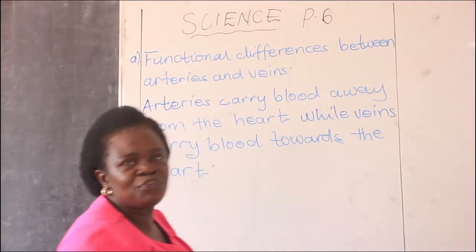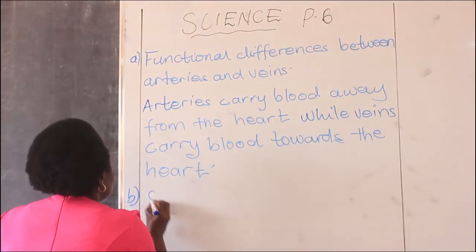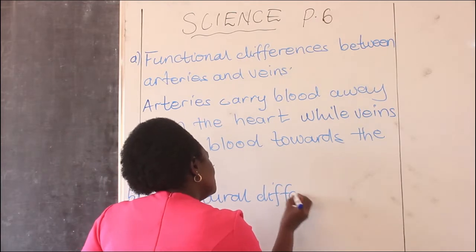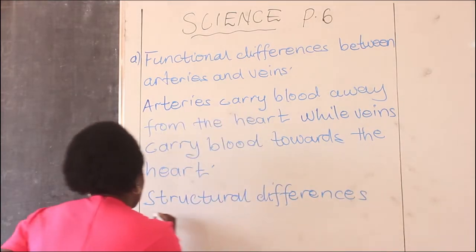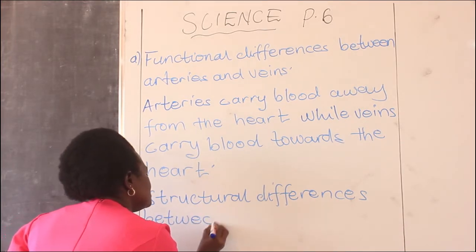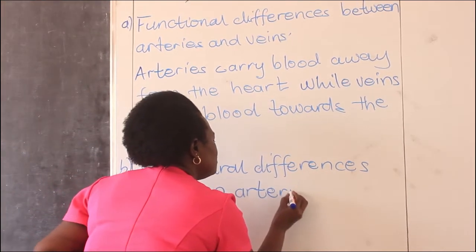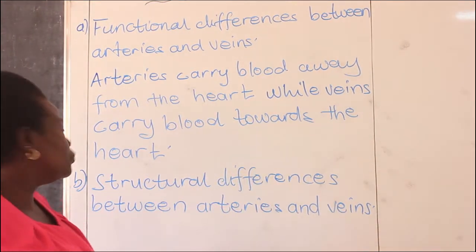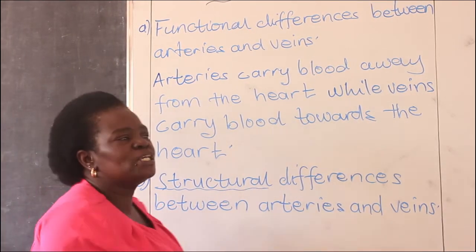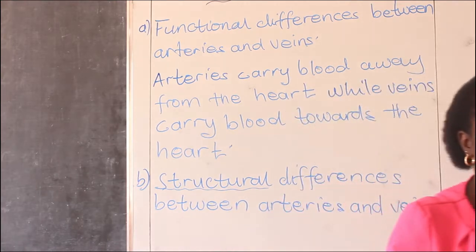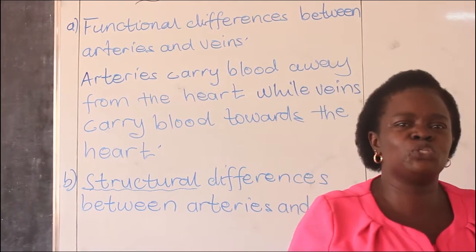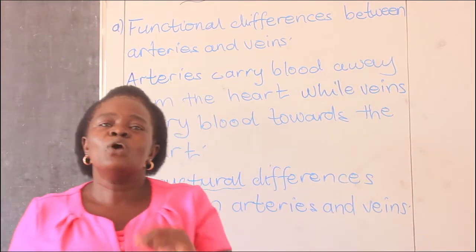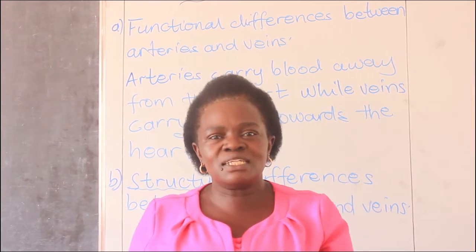Now let us look at the structural difference between arteries and veins. We are looking at the structural differences. With the word structure, we are looking at the physical appearance — how do they look like if you looked at them physically. That is what we mean by structure. The structural differences between arteries and veins are three.